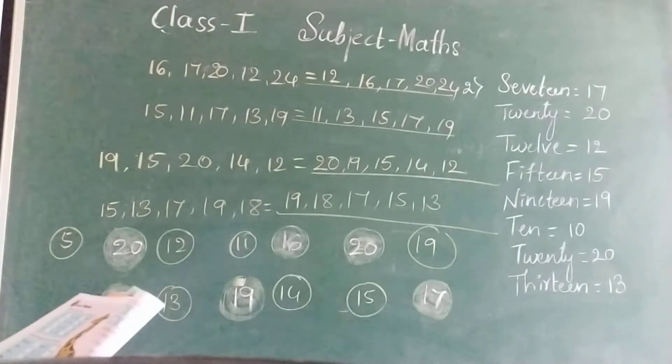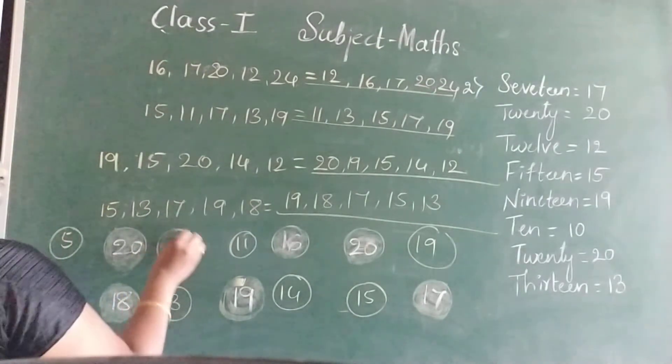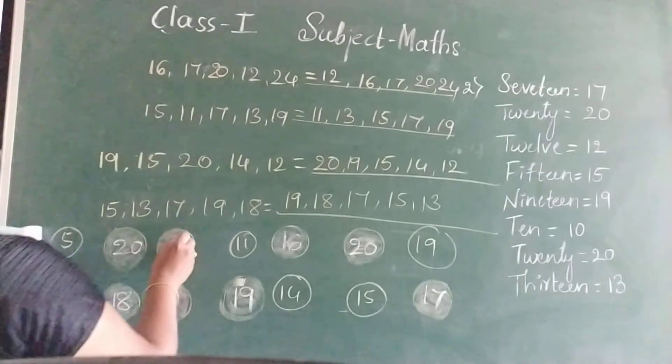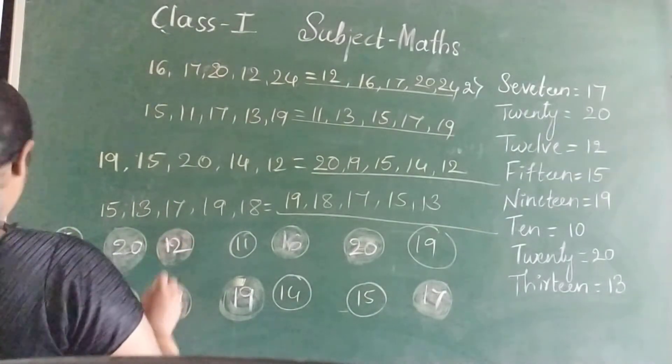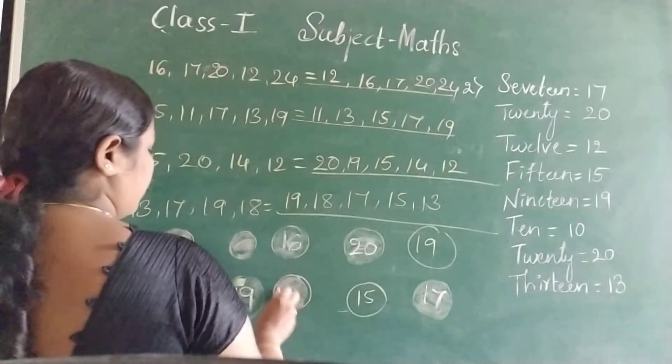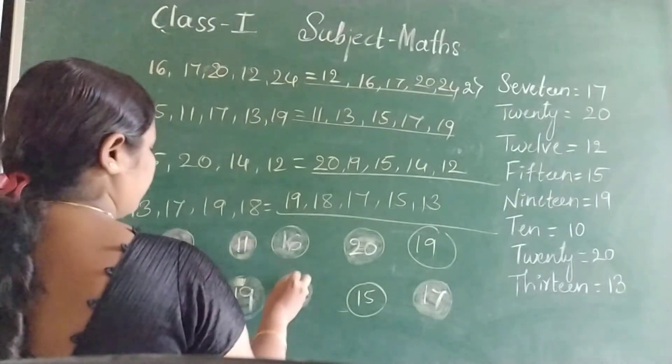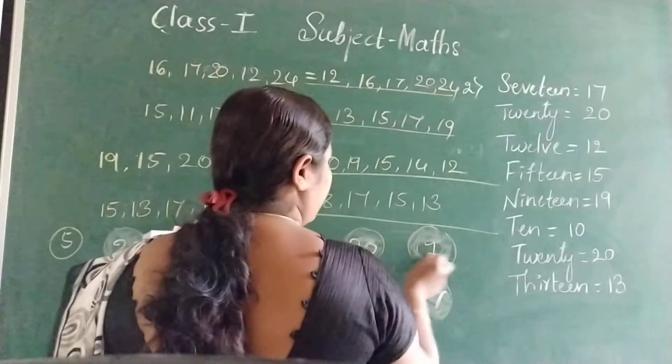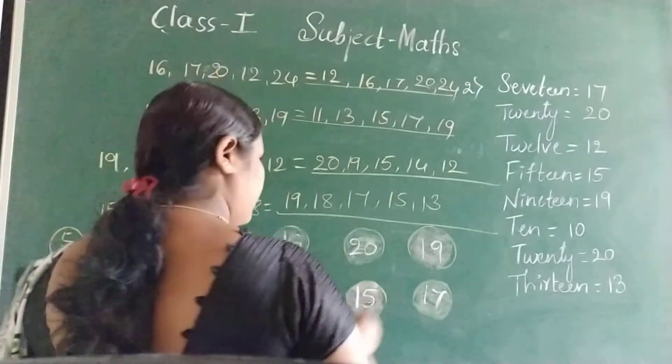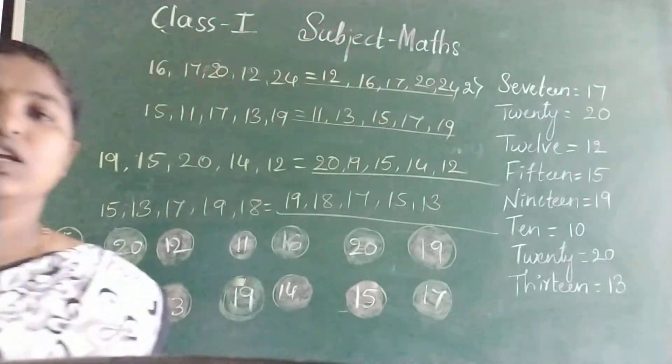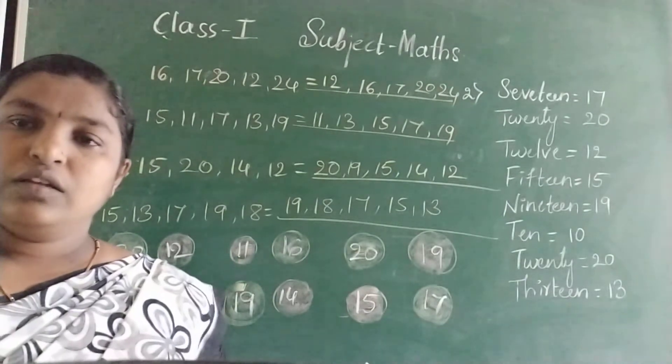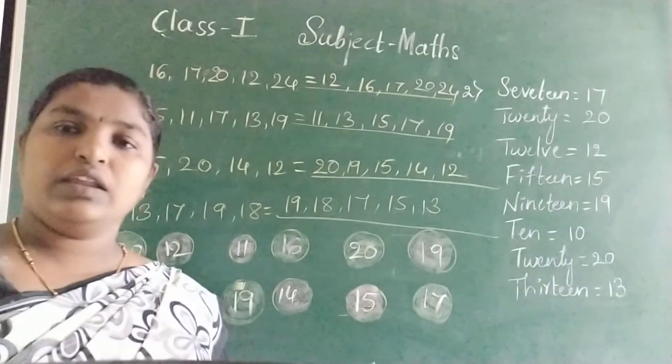And the smaller number with red. Remaining all are small numbers. So colour these by red. 12, 13. I hope you understood this. You should colour by green to the greater number and colour red for the small number.